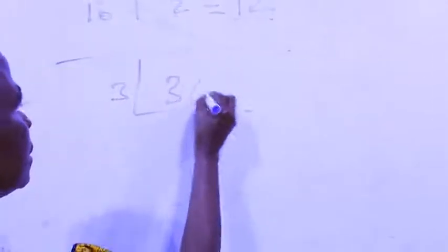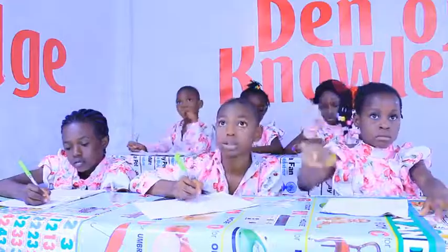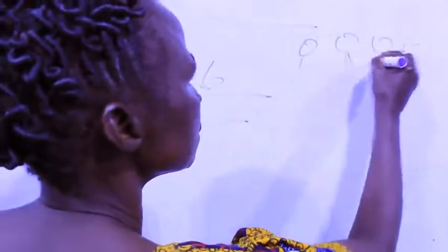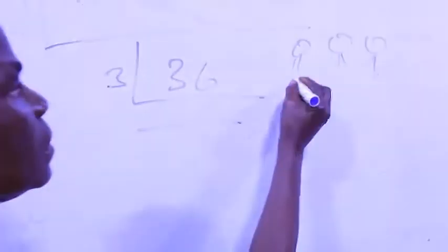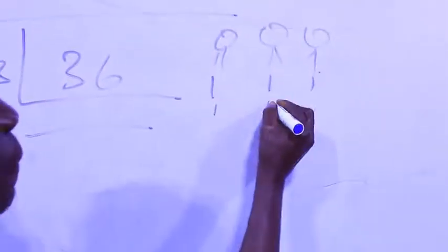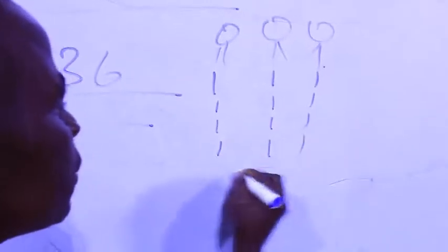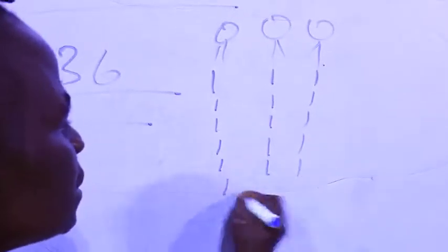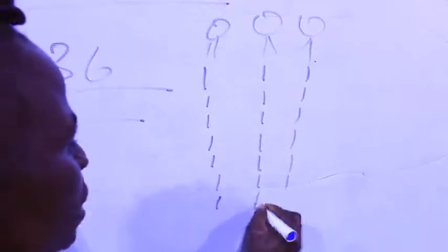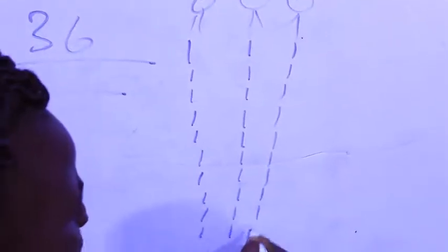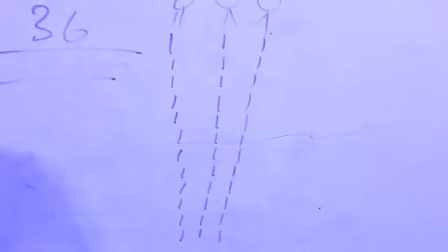3 divided 36. If you can't do it, use 3 persons to share 36. Counting from 1 through 36 items, distributing them among three people.